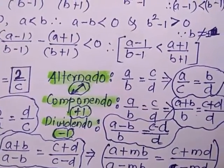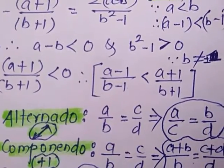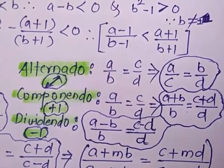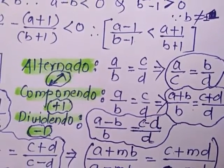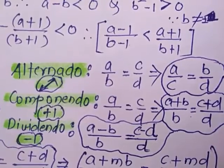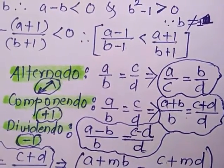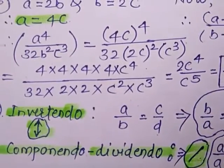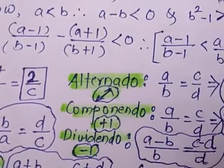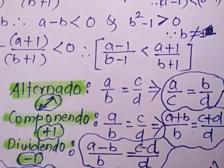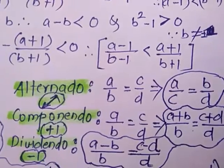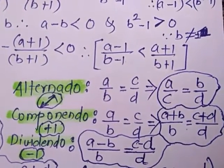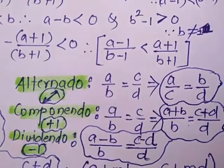Next is alternendo. Dividing both sides by C multiplied by D, we get A/C is equal to B/D. The first denominator is exchanged with the second numerator and vice versa — that is alternendo, meaning alteration is there. Invertendo means inversion, and componendo means you add 1 to both sides.